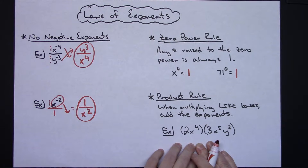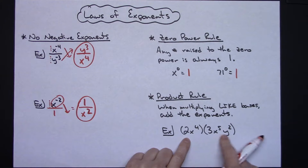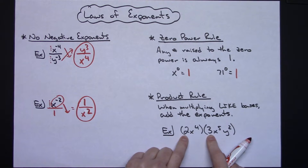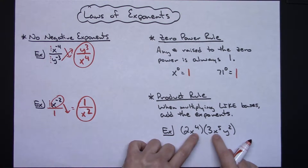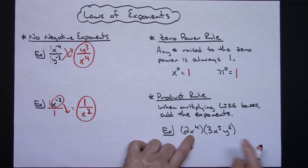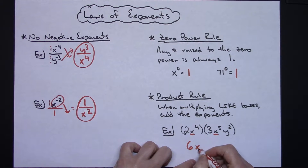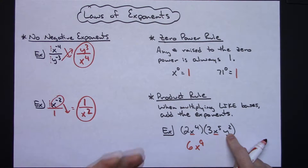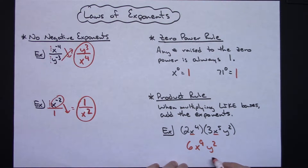Another rule is the product rule: when multiplying like bases, you add the exponents. This rule applies only to the exponents — it has nothing to do with coefficients. So in this example, I multiply the coefficients normally: 2 times 3 gives me 6. Then I look for like bases — I've got x to the 4th and x to the 5th, so I add the exponents: 4 plus 5 gives me x to the 9th. There are no other y's in the problem, so I just leave y squared. When multiplying like bases, you add the exponents.